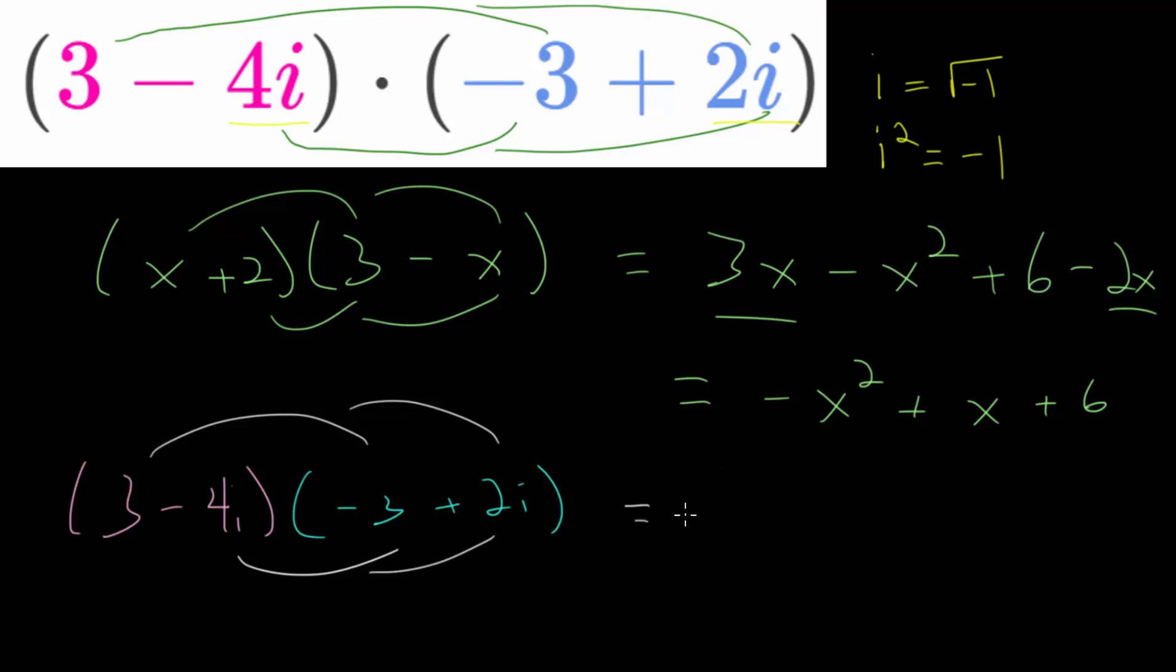3 times negative 3, that's negative 9. 3 times 2i would be 6i. Minus 4i multiplied by negative 3, the negatives cancel, we get plus 12i. And we do minus 4i times by positive 2i, that would be minus 8, and we get i times i, which is i squared.